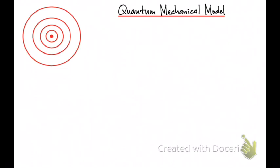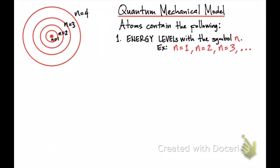Now let's look at the quantum mechanical model and what it is exactly. It basically still uses the nuclear model, where you have the nucleus at the center and orbits surrounding it. But the terminologies change based on this quantum mechanical model. In this model, atoms contain energy levels, represented by the symbol lowercase n. You have n=1 for the first energy level, n=2 for the second, n=3, n=4, and so on. The higher the n value, the greater the energy.